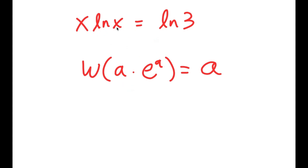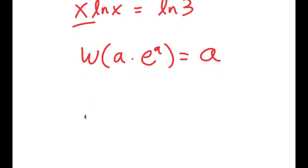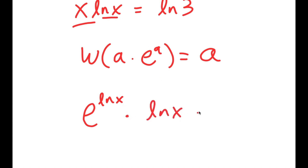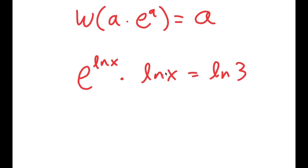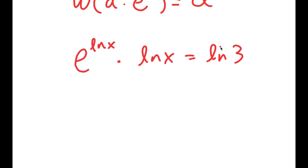So in this case, I'm going to rewrite this so that it suits the Lambert W formula. We need to change this to be in the form a times e to the power of a. I'm going to rewrite x as e to the power of ln of x, because e to the power of ln cancel out, so that's just x. So x is the same thing as e to the power of ln x, and I have this times ln x is equal to ln 3. Notice how this is now in the form a times e to the power of a, with a being ln x.